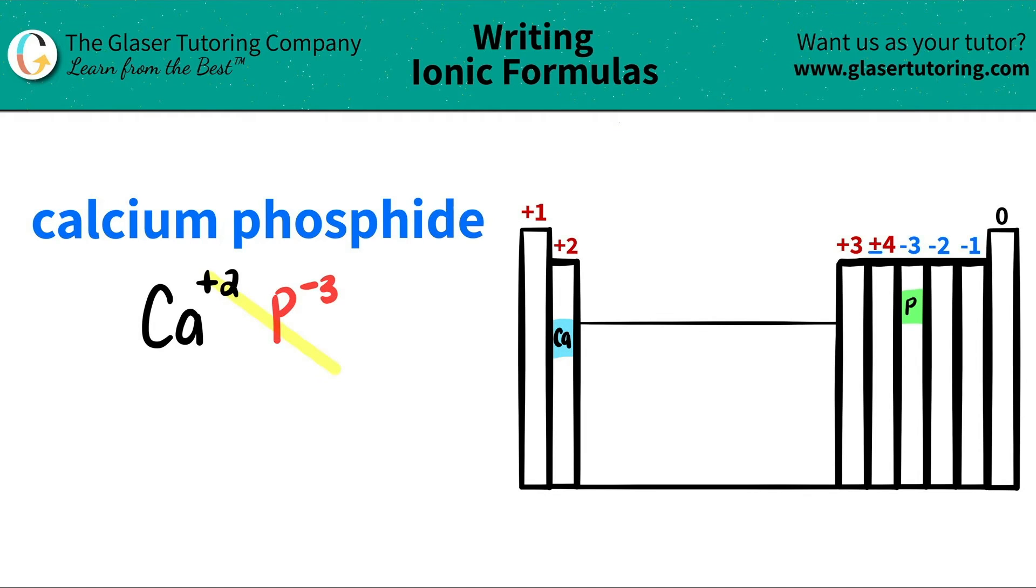This plus 2 crisscrosses down telling me that I need 2 phosphorus, and then this negative 3 crisscrosses down telling me that I need 3 calciums. When you do this little trick you can get rid of the charges on the top. We're just focusing on how many of each we need on the bottom.